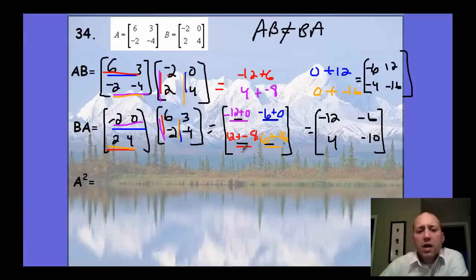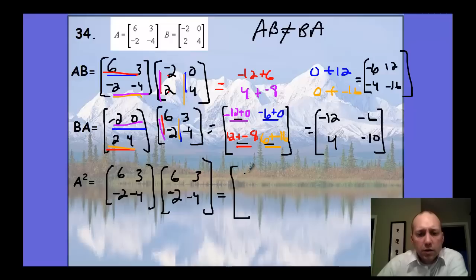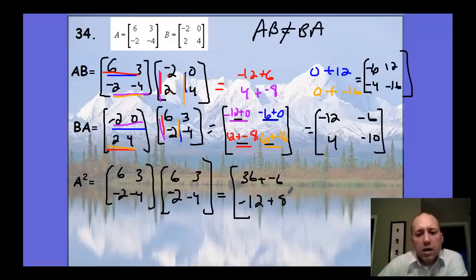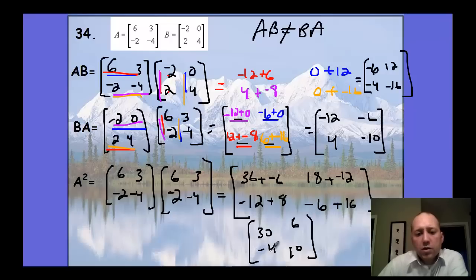Be careful — some properties do not hold true for matrix math. Let's look at A squared, which is A times A. You get 36 plus negative six, negative 12 plus eight, 18 plus negative 12, and negative six plus 16. Computing those: 30, negative four, six, and ten. That's the square of matrix A.